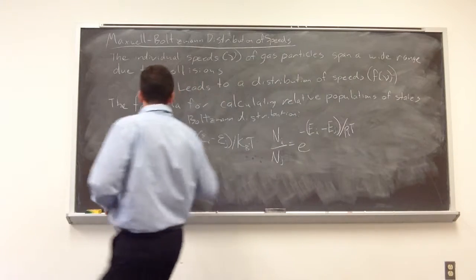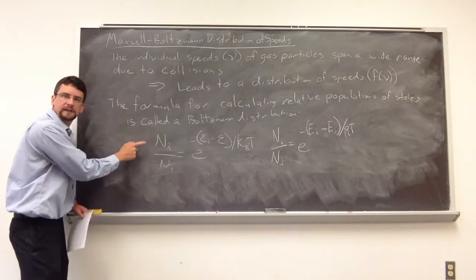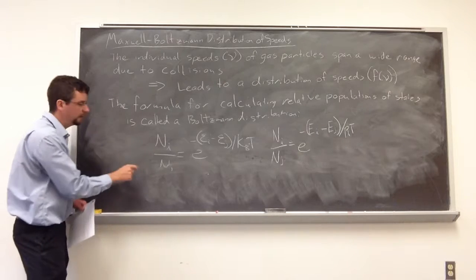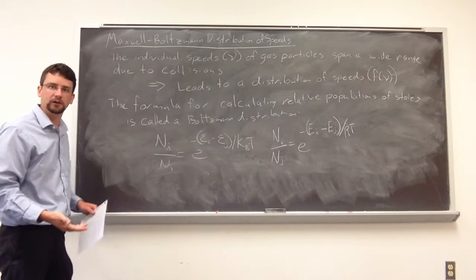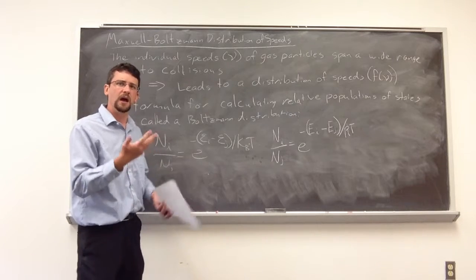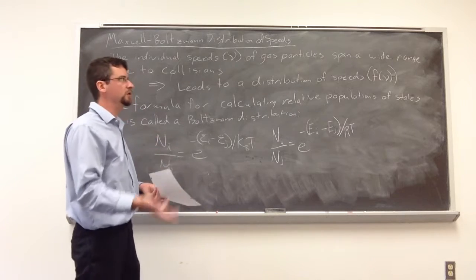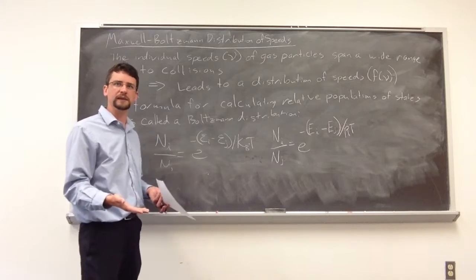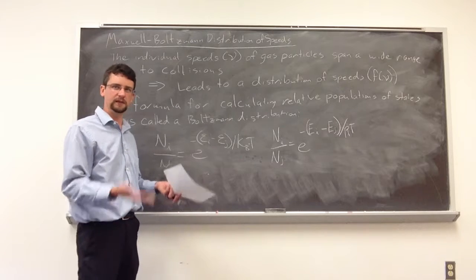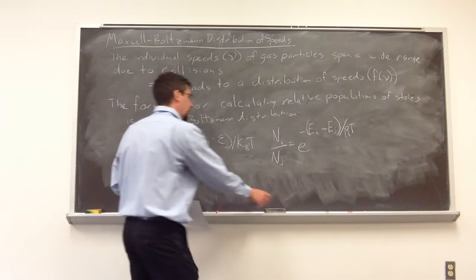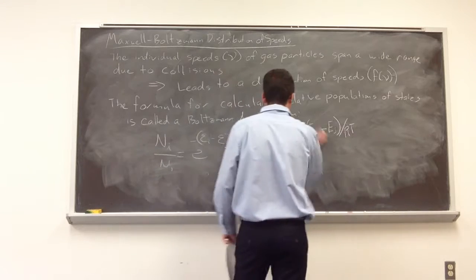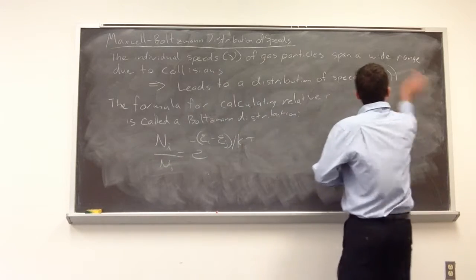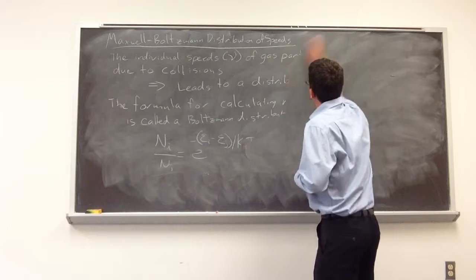So what we're talking about, N sub I is the number of particles in that state I, N sub J is the number of particles in that state. So we can get an idea of the distribution of states. We're going to look at an example where we can actually calculate the differences in isomers or conformers of one another.